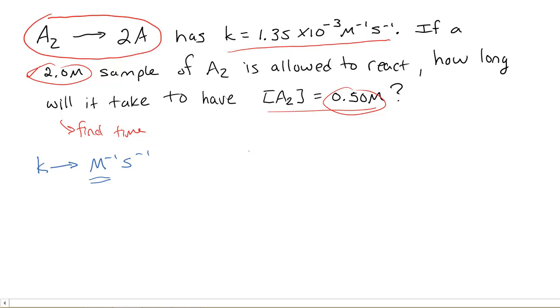So if I have something that's 0 order, and just so we can remember, we're always going to have something like this. Rate is equal to k times whatever we're talking about, in this case it's A2, raised to some power X. So that means that if I have 0 order, I have rate is equal to k times A to the 0th, which is just 1.